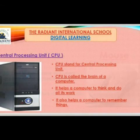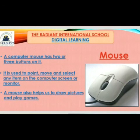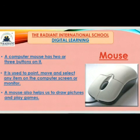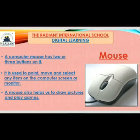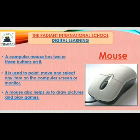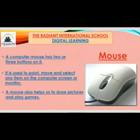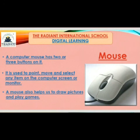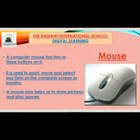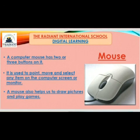Now next is mouse. A mouse has two or three buttons on it. It is used to point, move, and select any item on the computer screen or monitor. A mouse also helps us to draw pictures and play games. Last time we drew pictures and colored them in Paint using the mouse, and we need to do that again this time.